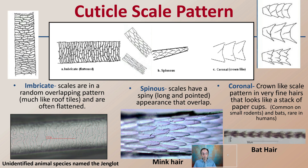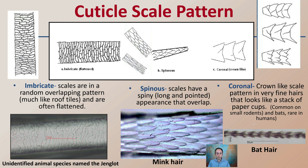The cuticle scale pattern is another area we want to look at. Imbricate scales are random overlapping patterns, much like roof tiles, and are often flattened. Spinous scales have a spiny, long, and pointed appearance that overlap — you can see that clearly in the mink hair. Coronal scales are crown-like patterns found in very fine hairs; it looks like a stack of paper cups, common in small rodents and bats, and very rare in humans. Bat hair is clearly very distinctive compared to mink hair or an unidentified animal with the imbricate scale pattern. This is an important method for classifying hair to a particular species.